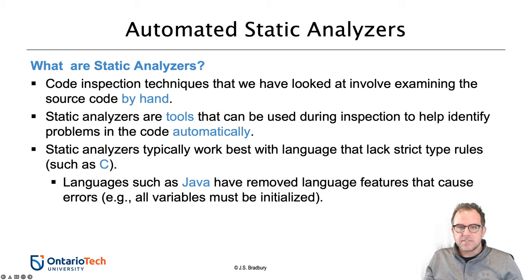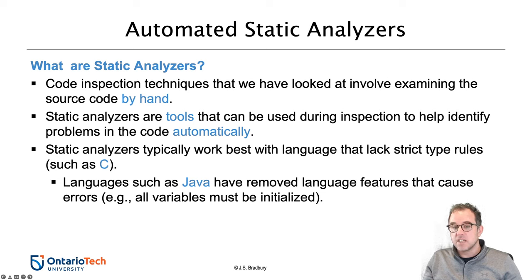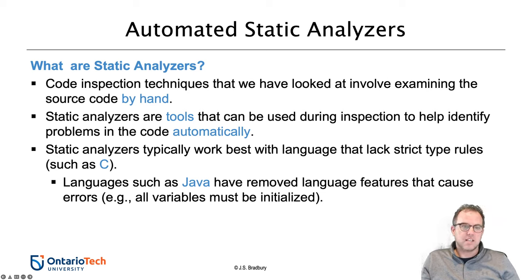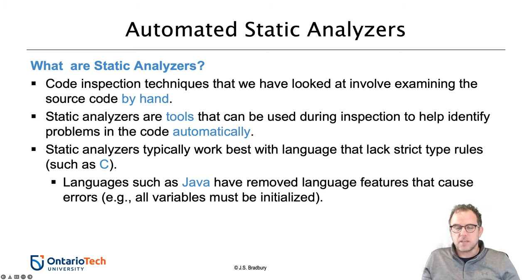In general, you'll find that a lot of static analyzers work really well with languages that lack strict type rules, such as C. Languages like Java, which have strict typing, aren't as useful targets because the language features that static analyzers help identify aren't available in that type of language. For example, all variables must be initialized in a Java program, so you're not going to run into errors where people try to use them without a proper definition.